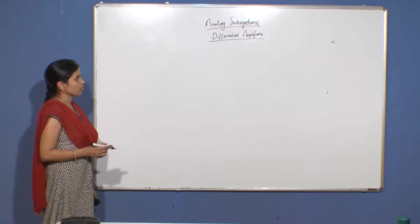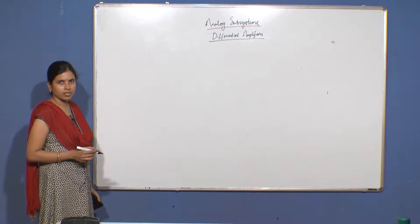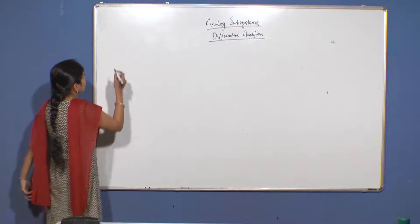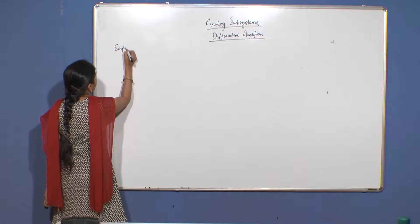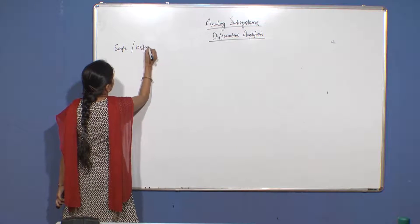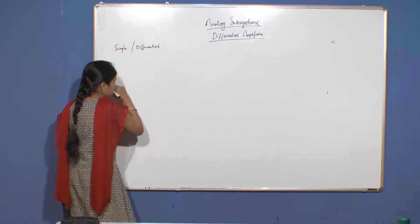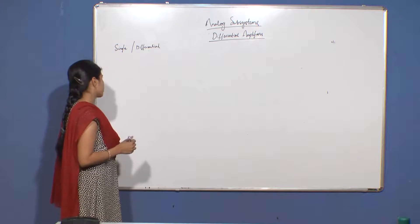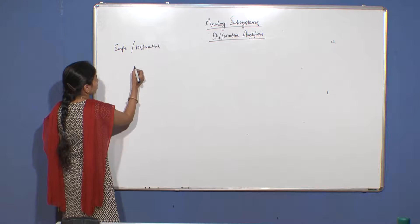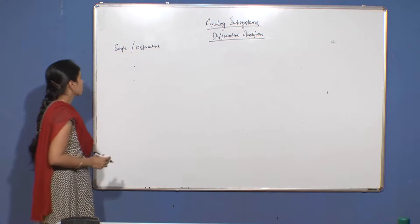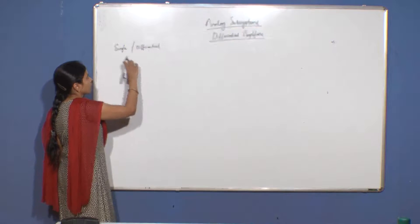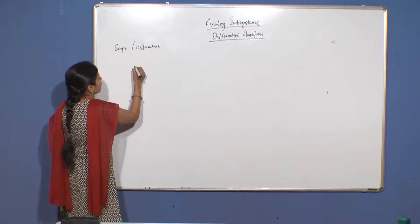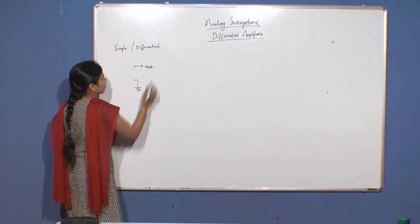Before going to the differential amplifiers, let us first discuss about the difference between single-ended and differential-ended signals. Voltage is defined between two points, so whenever we want to measure a voltage it is actually measured between two points. In case of single-ended signals, one of the nodes is grounded and the output is taken at the other node.